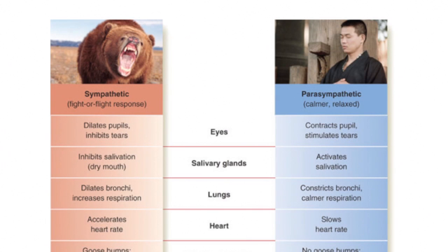Your pupils contract, you can salivate, your heart rate slows. Once the danger is out of the way, the parasympathetic nervous system kicks in and everything goes back to normal. The important point is that all these things are automatic. If you had to think, 'Oh my God, there's a bear — I better dilate my pupils and stop digesting my food,' that wouldn't be very advantageous. So all these are mediated by your autonomic nervous system.